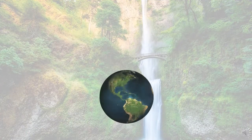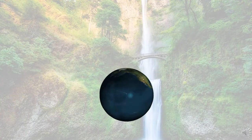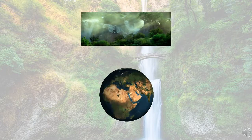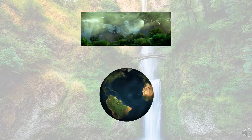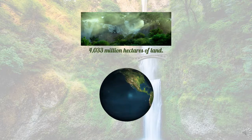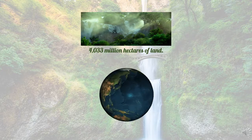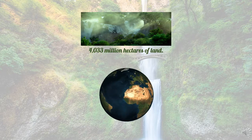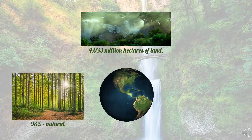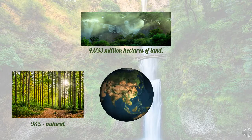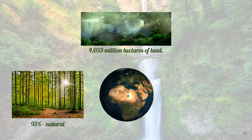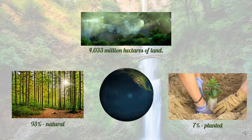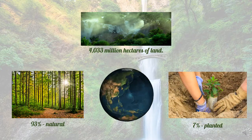One-third of the world's total land area consists of forests, and it's about 4,033 million hectares of land. 93% of this area is considered as natural forests, while the remaining 7% is planted.